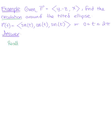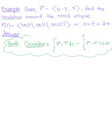Let's recall that circulation is simply a vector line integral with a tangential component, but the requirement is that our curve C must be closed — the start and terminal point have to be the same. So we define circulation as the vector line integral of f dotted with the unit tangent vector ds, or equivalently the integral from a to b of the vector field dotted with the tangent vector dt.